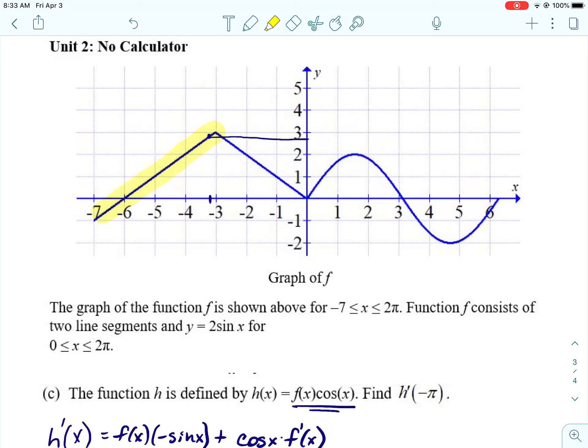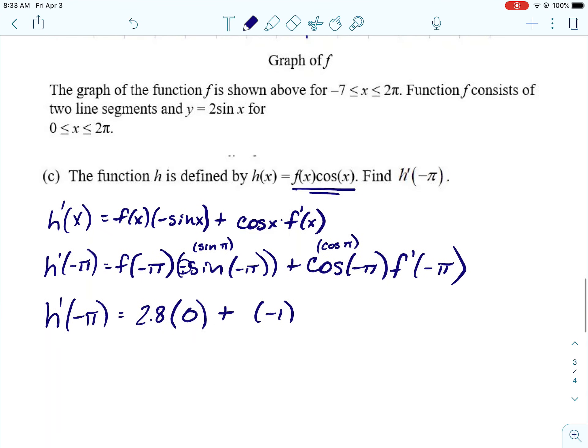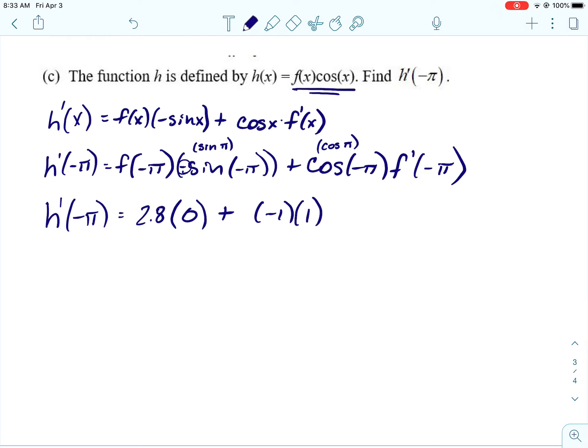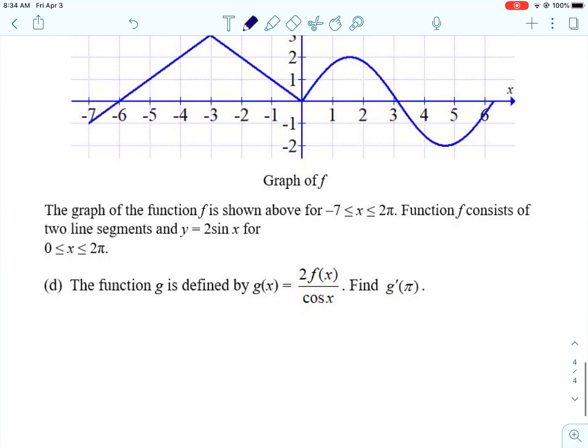Alright, and then f prime of negative π. So, we go back to this negative π point, which is a little bit less than negative three. And f prime is going to be the slope of that line segment. And it looks like the slope of that line segment is one. Okay, so then h prime of negative π is going to be negative one.